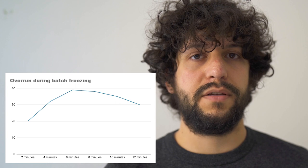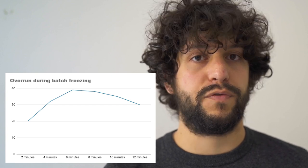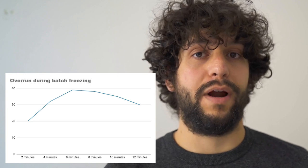Let's talk about how much overrun is dependent on our process. Overrun in the same product can be different depending on how we process our gelato. The biggest variation happens when changing the extraction temperature. The amount of air incorporated in our mixture is related to the temperature at which we bring our gelato during freezing. The amount of overrun increases until a certain temperature, usually between minus 2 and minus 4 degrees, and then after a peak or threshold, it starts decreasing.